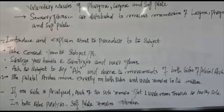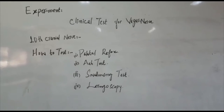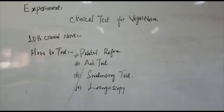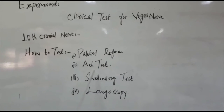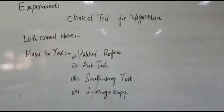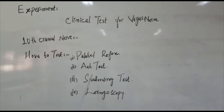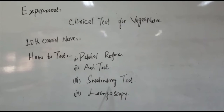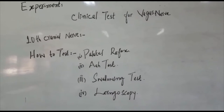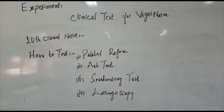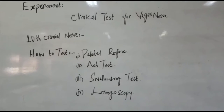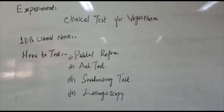Next is performance. The cranial nerve is tested by palatal reflex — the arc test. I will ask the subject to say 'ah' and observe the palatal arches on both sides using a tongue depressor and torch for light. Next is the swallowing test: the subject is asked to take sips of water and swallow. Normally the subject swallows easily without choking. The fourth test is laryngoscopy to see movements of vocal cords, but usually we don't perform it.